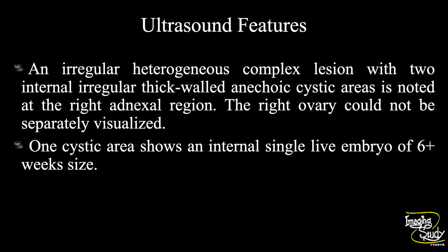In summary, an irregular heterogeneous complex lesion with two internal cystic areas is noted at the right adnexal region. The right ovary could not be separately visualized. One cystic area shows an internal single live embryo of six-plus weeks size, indicating a right adnexal live ectopic pregnancy. The other cystic area was the corpus luteal cyst.